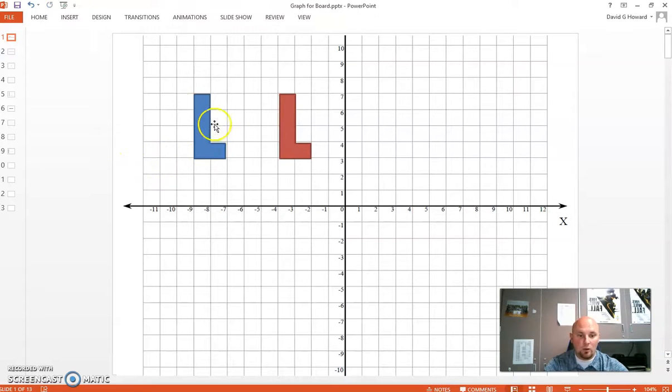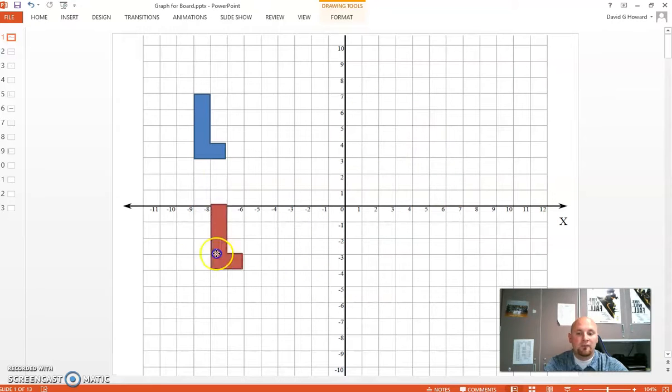That means it started here where the blue was and I slid it five units to the right. So it just goes over one, two, three, four, five and it ends up right there. It did not change in shape. It did not change in size. All the angles stayed the same. That's what a slide is. You're literally just sliding it around to different parts.